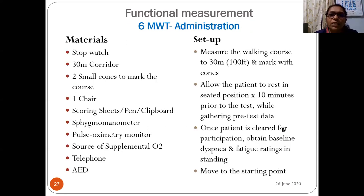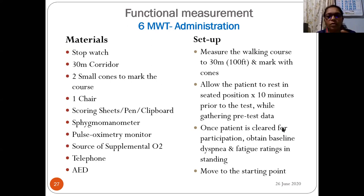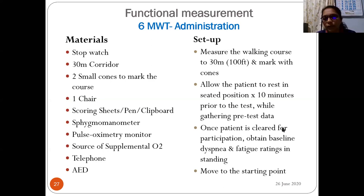Materials needed: stopwatch, 30-meter corridor, two small cones to mark the course, one chair, scoring sheet, pen, clipboard, sphygmomanometer, pulse oximeter, oxygen supply, telephone, and AED. Setup: measure and mark a 30-meter walking course with cones, marking each meter. Allow the patient to rest in a seated position for 10 minutes prior to the test while gathering pre-test data. Once cleared, obtain baseline dyspnea and fatigue ratings in standing, then move to the starting position.